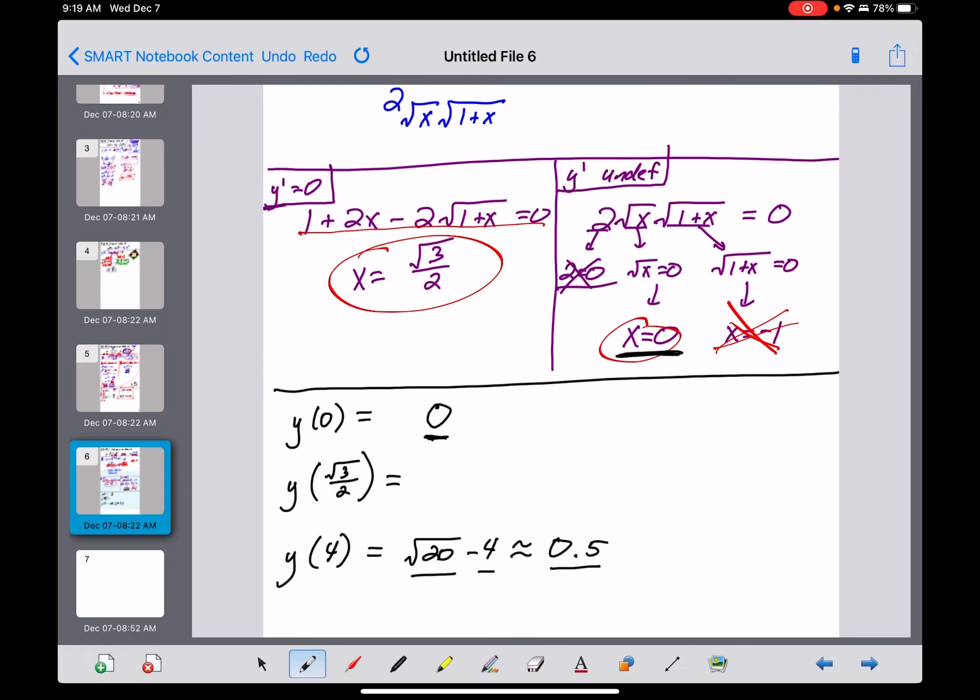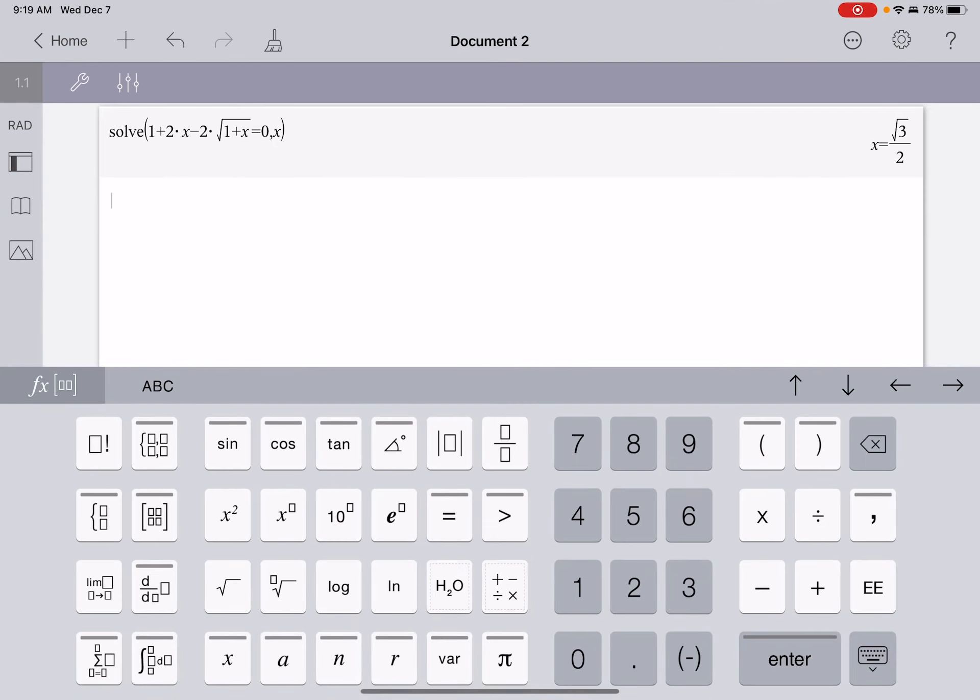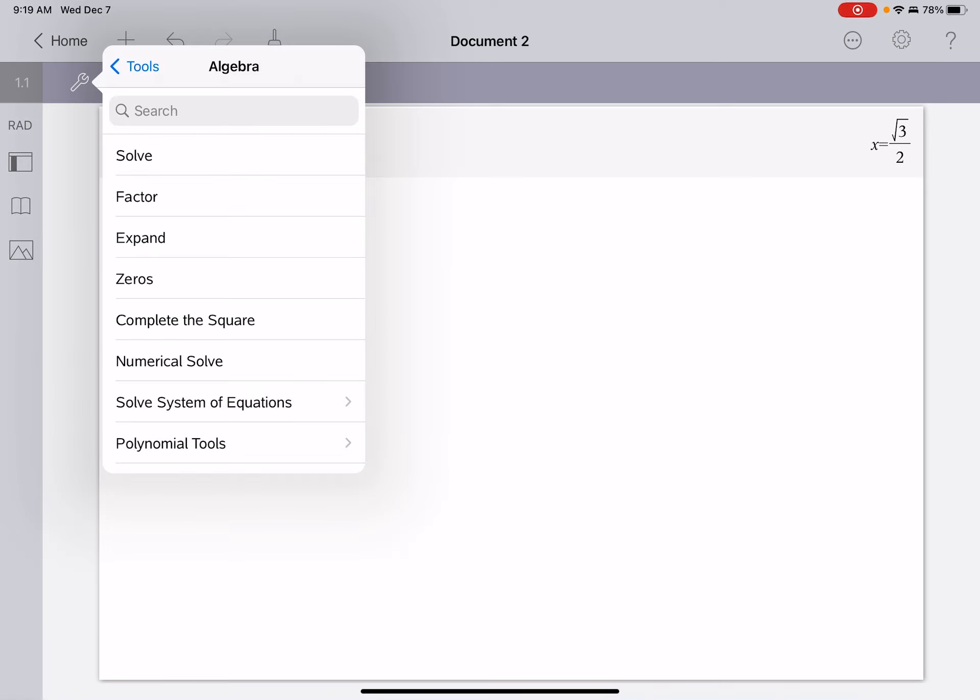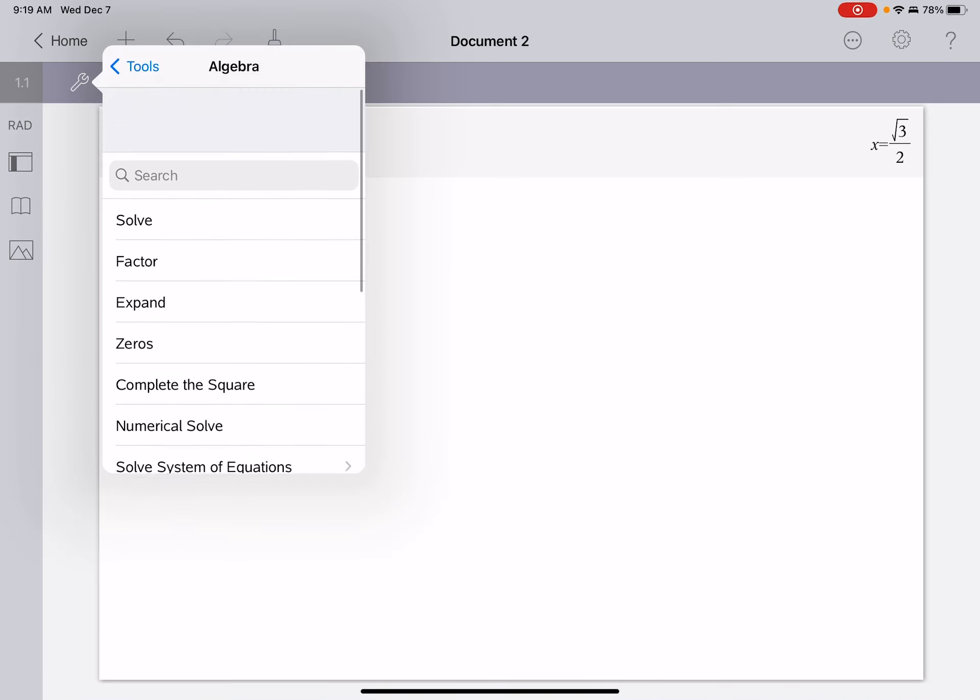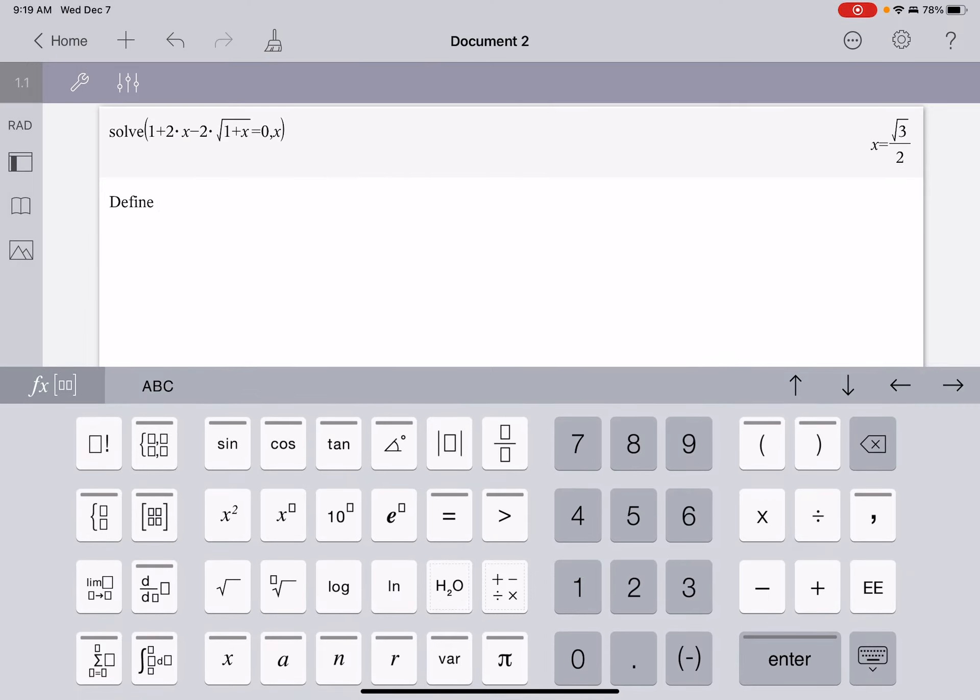But putting in that root 3 over 2, that's a mess. So, I tell you what I'm going to do right now. I'd go to the calculator, and I would define this original function. So, where's our define feature? We are going to, not under the algebra menu, action. Here we go, define.